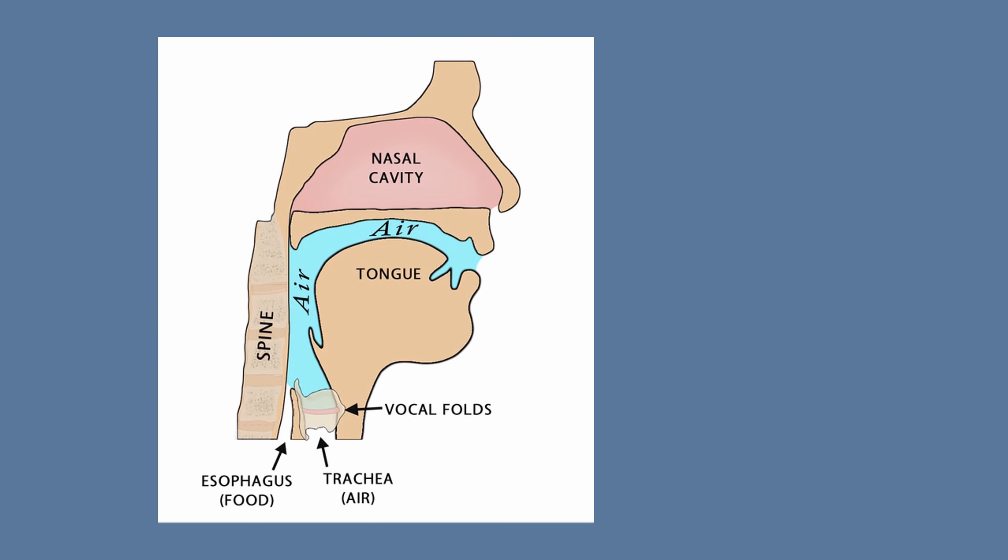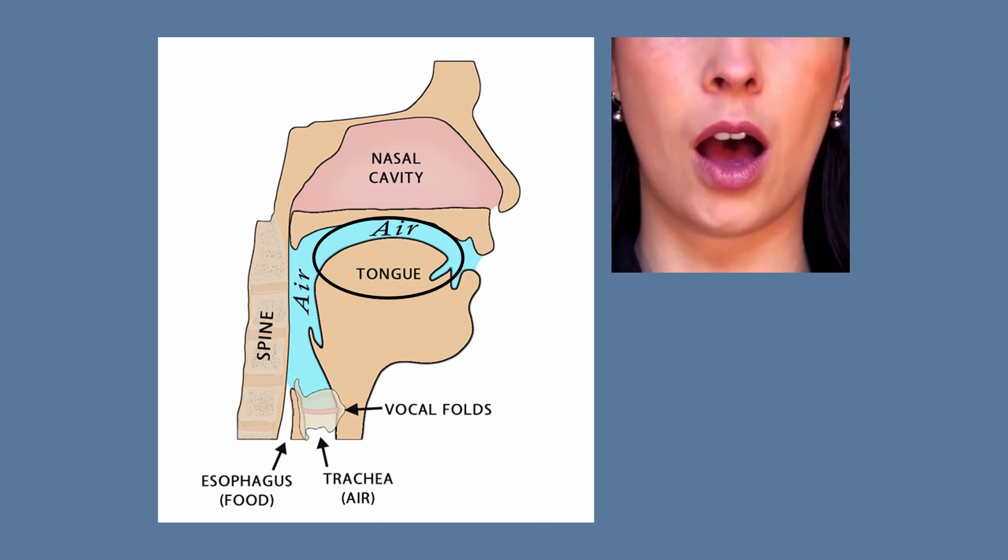Vowel production demands an open vocal tract, allowing free airflow with the sound generated at the larynx. The size and shape of the tract can be varied and modified by the shape of the tongue and the shape and degree of rounding and protrusion of the lips.